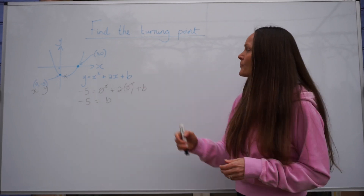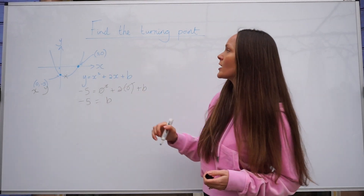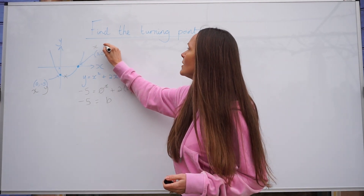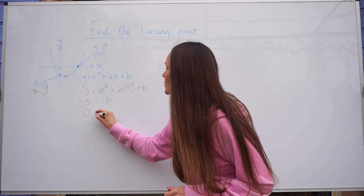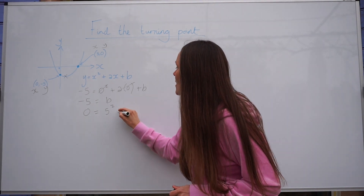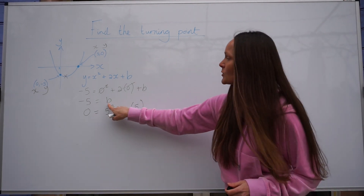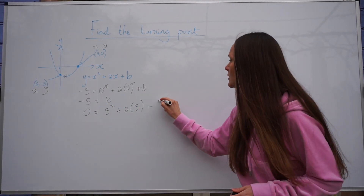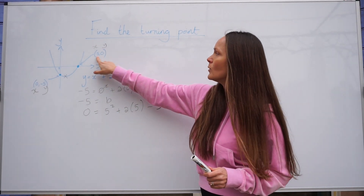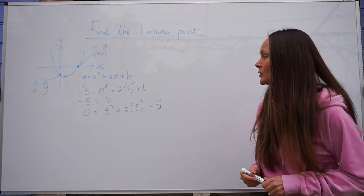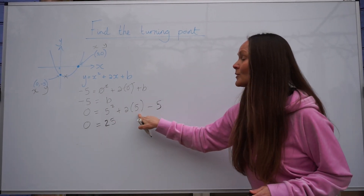To work out the value of a, I'm going to substitute the second coordinates into the equation. Remember x is the first number and y is the second. When I substitute those two numbers into the equation, I get 0 equals 5 squared, then a multiplied by 5, and instead of writing plus b I can substitute in the real value of b, which is minus 5. I've changed the y value to 0 and the x values to 5. Simplifying: 5 squared is 25, and a times 5 is 5a.